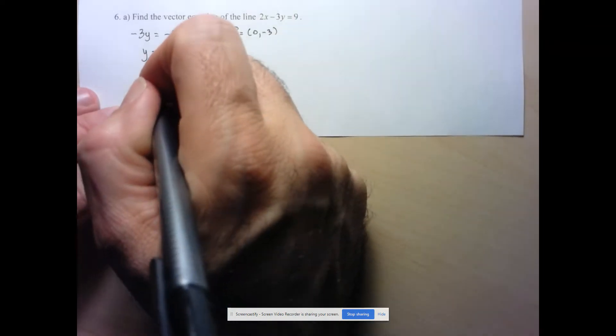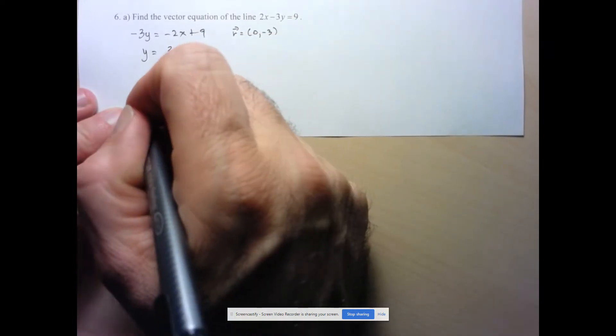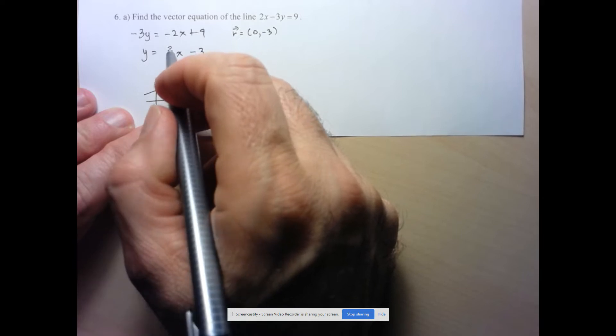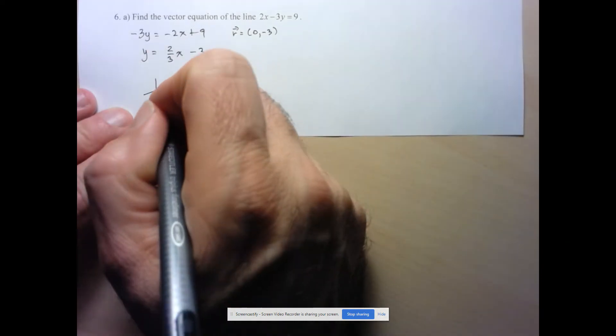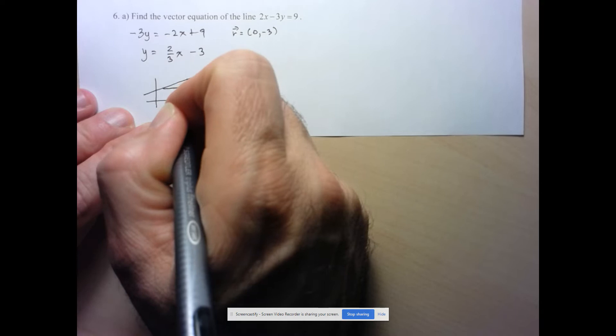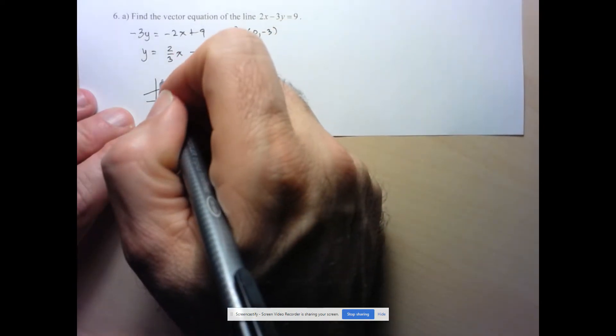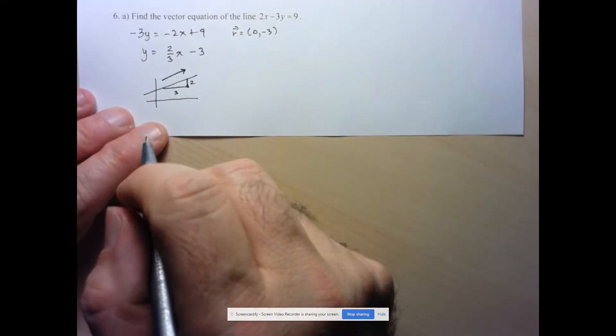So let me just draw myself a diagram as a guide. So I've got this line here, and what does the slope represent? Well, it represents the ratio of the increase of y with respect to the increase of x. So as x goes up by 3, y goes up by 2.